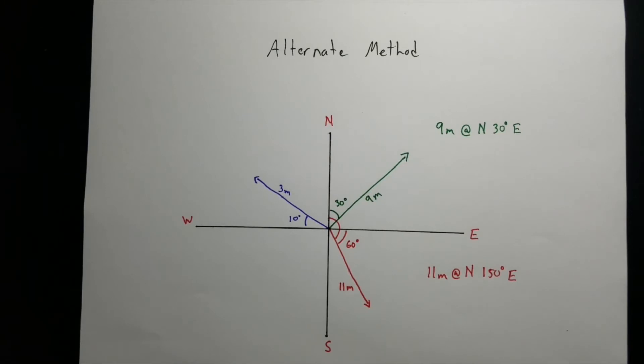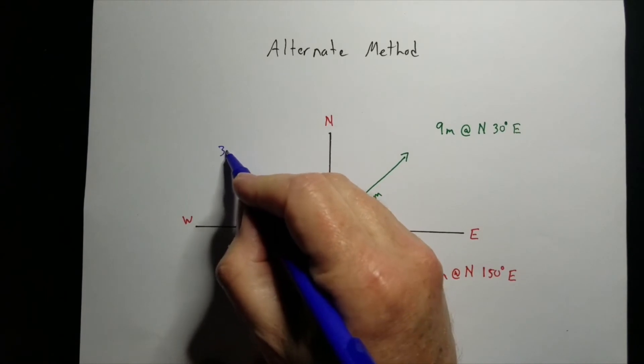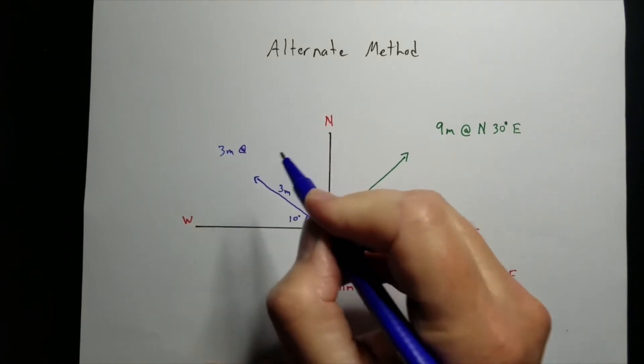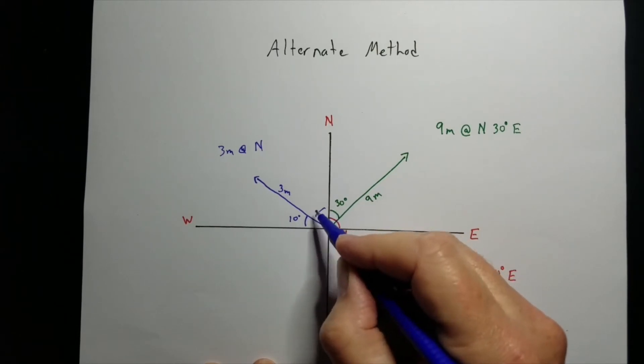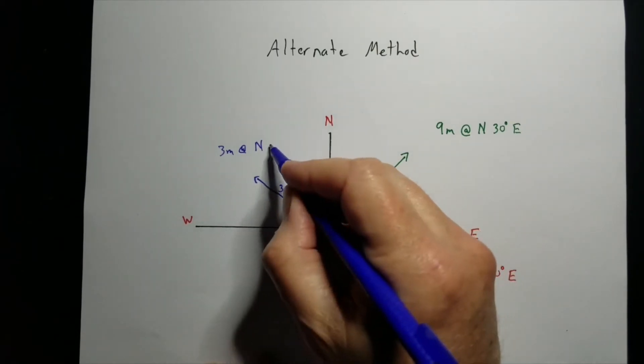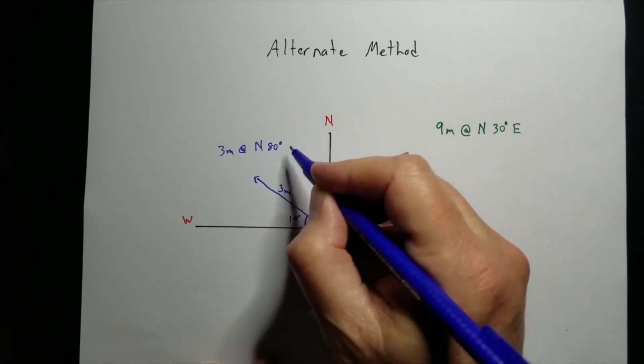For the blue one, it would be 3 meters at north. That's 10. That means this has got to be 80. 80 degrees west.